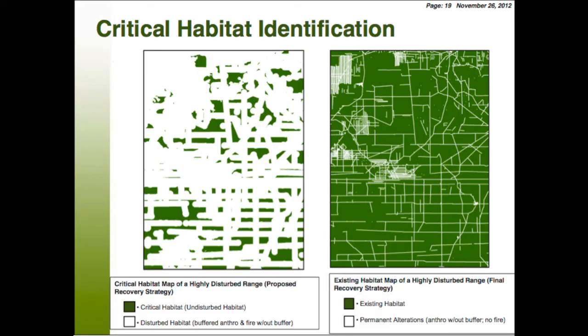Here's an example in a highly disturbed landscape of what we originally looked at as critical habitat versus what we're looking at now. In the original proposed recovery strategy on the left, we took out areas where there were fires, areas with anthropogenic disturbance, and had a 500-metre buffer around all of that. Now we're looking at existing habitat — everything minus permanent alterations. We're also saying that buffer areas and burned areas could in fact be critical habitat, because we're aiming for 65% of the area to be undisturbed over time.